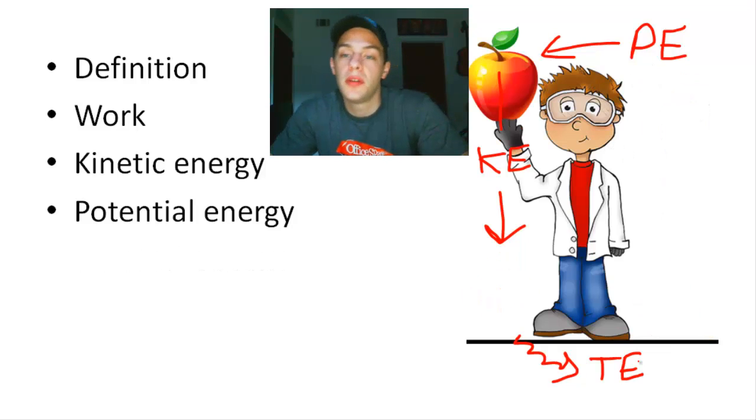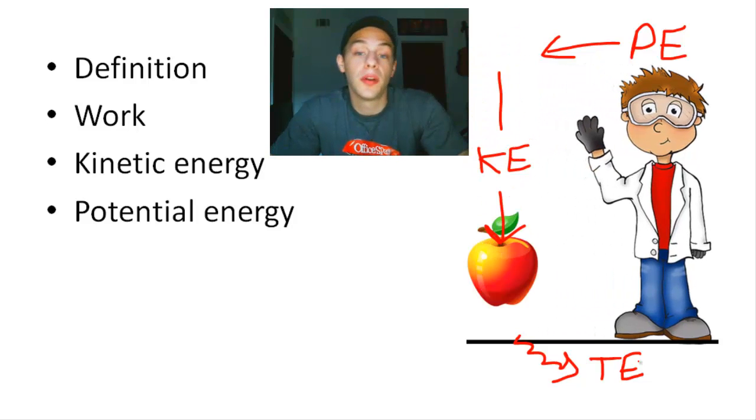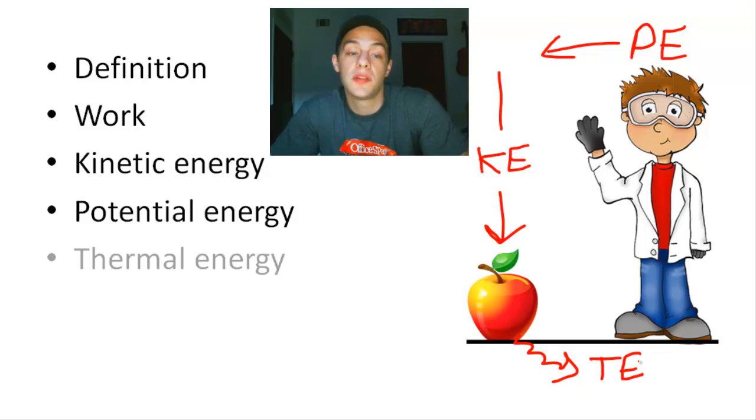So let's recap. The apple initially has potential energy. As it falls down, it gets converted into kinetic energy. When it hits the ground, it gets converted into thermal energy and it also gets transferred to the ground, which raises the temperature of the ground by just a little bit.